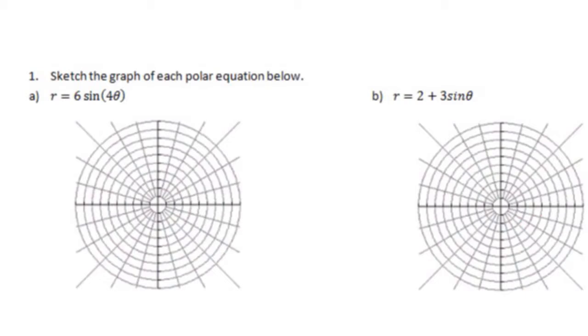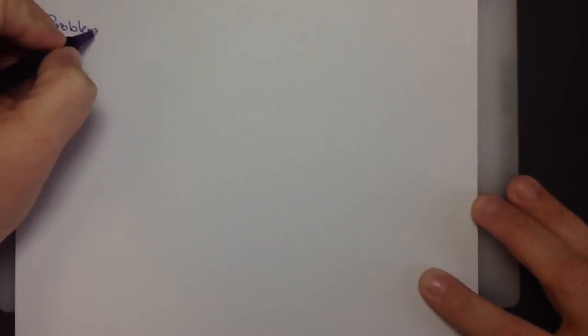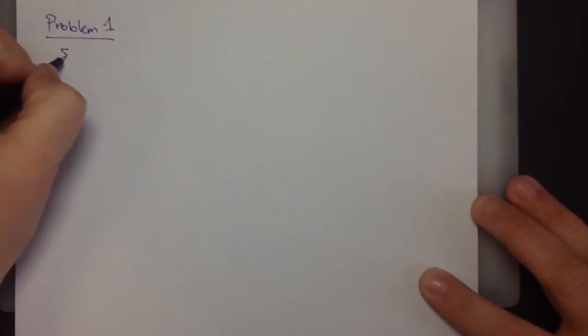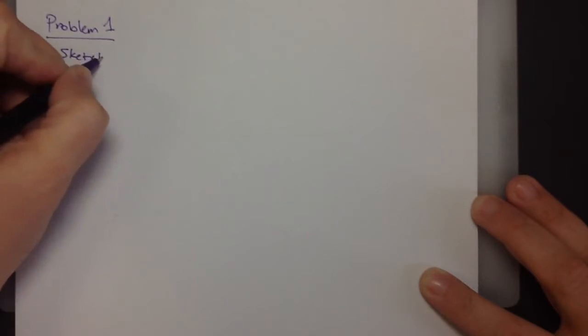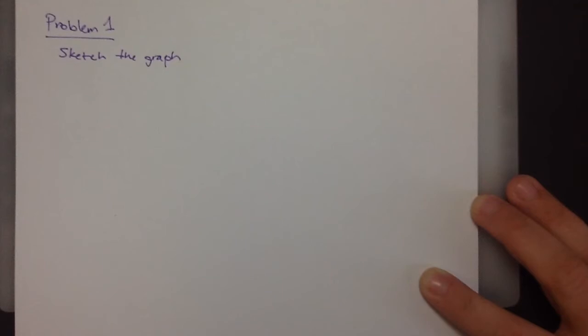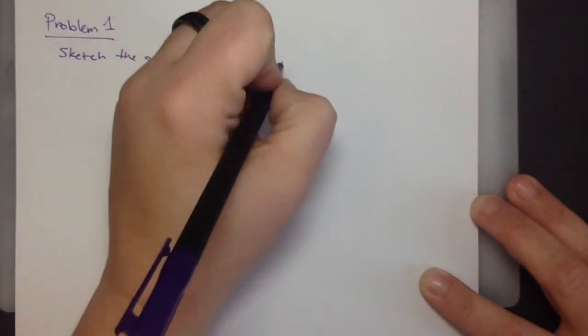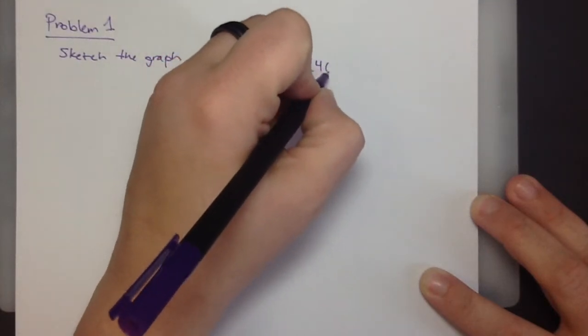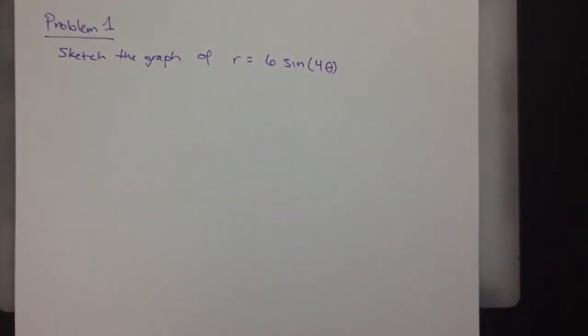Alright, so the first problem says to sketch the graph of r equals 6 times the sine of 4 theta. Fascinating. Let's see.